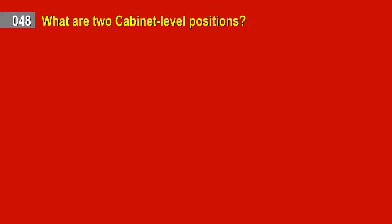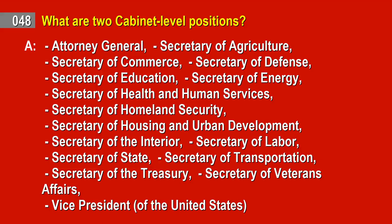Question 48. What are two Cabinet-level positions? Answer: Attorney General. Secretary of Agriculture. Secretary of Commerce. Secretary of Defense. Secretary of Education. Secretary of Energy. Secretary of Health and Human Services. Secretary of Homeland Security. Secretary of Housing and Urban Development. Secretary of the Interior. Secretary of Labor. Secretary of State. Secretary of Transportation. Secretary of the Treasury. Secretary of Veterans Affairs. Vice President of the United States.